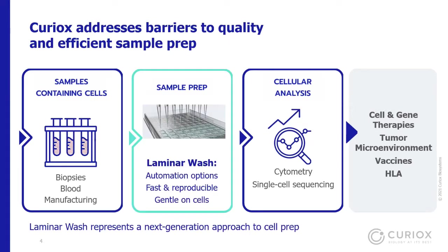Our solution is called laminar wash — a novel method of sample prep to overcome these challenges. Instead of complicated centrifuge-based automation, laminar wash is much more straightforward to automate. It requires much less hands-on time, addressing throughput and reproducibility issues inherent to centrifuge-based systems. Instead of subjecting precious cells to hundreds of G-forces, laminar wash is gentler, washing cells without disturbing physiology, preserving cells in their native state for better phenotyping and genotyping downstream.